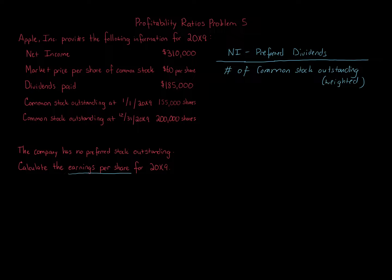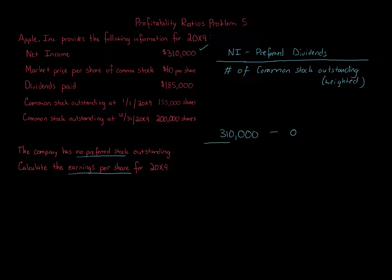So here, we're given net income: $310,000. We subtract away the preferred dividends — we're told there's no preferred stock outstanding. Remember, you have to have common stock if you're a corporation, but you're not required to have preferred stock. If you've got preferred stock, you have to have common stock though. So there are no preferred dividends. That gives us our numerator: $310,000. The denominator is the number of common shares outstanding, but it's weighted.